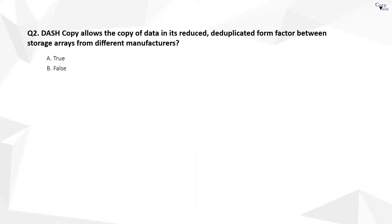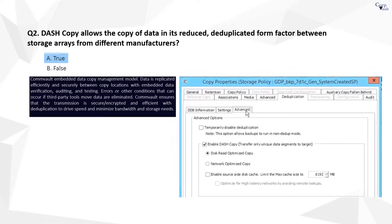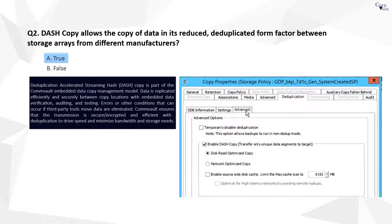Question 2. The correct answer is A. Dash copy is available only on secondary copies with deduplication and is enabled by default. Discrete optimization is the default method used, which optimizes data transfer by using existing data signatures. You can enable Network Optimize Copy, which optimizes data transfer by performing data deduplication on the source.